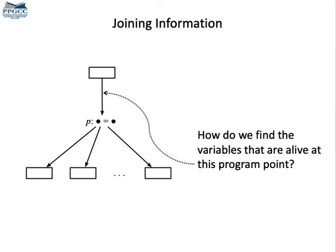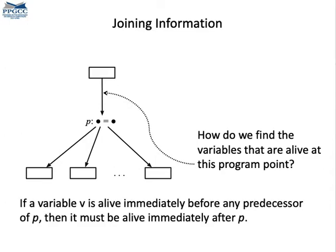Now what do we do about the join points? I mean, what about program points that have multiple successors? How do we compute the variables that are alive before a join point? We simply take the union of all the variables alive before the successors.